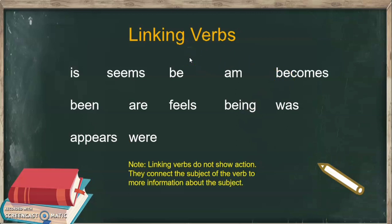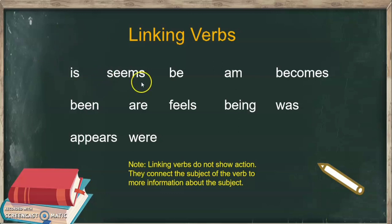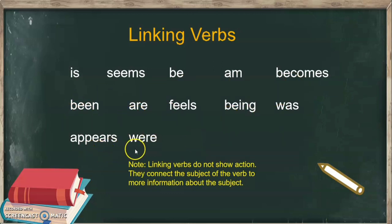For verbs, we don't only have action words. We also have what we call linking verbs. Here we have our linking verbs: is, seems, be, am, becomes, been, are, feels, being, was, appears, were. These are linking verbs.